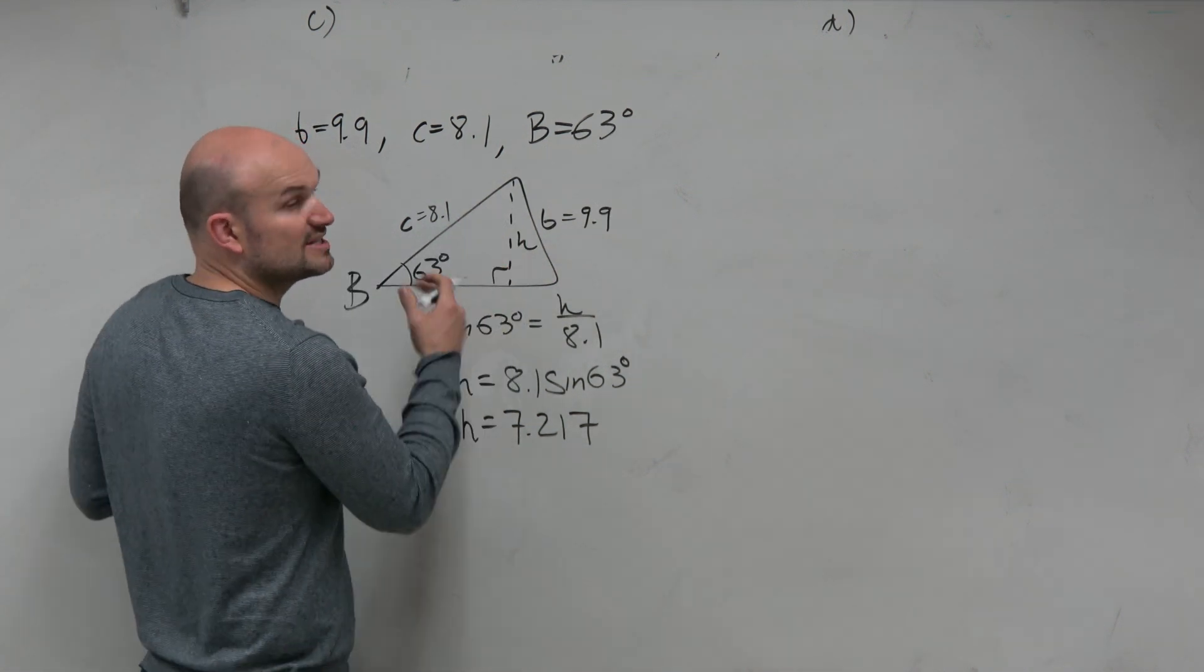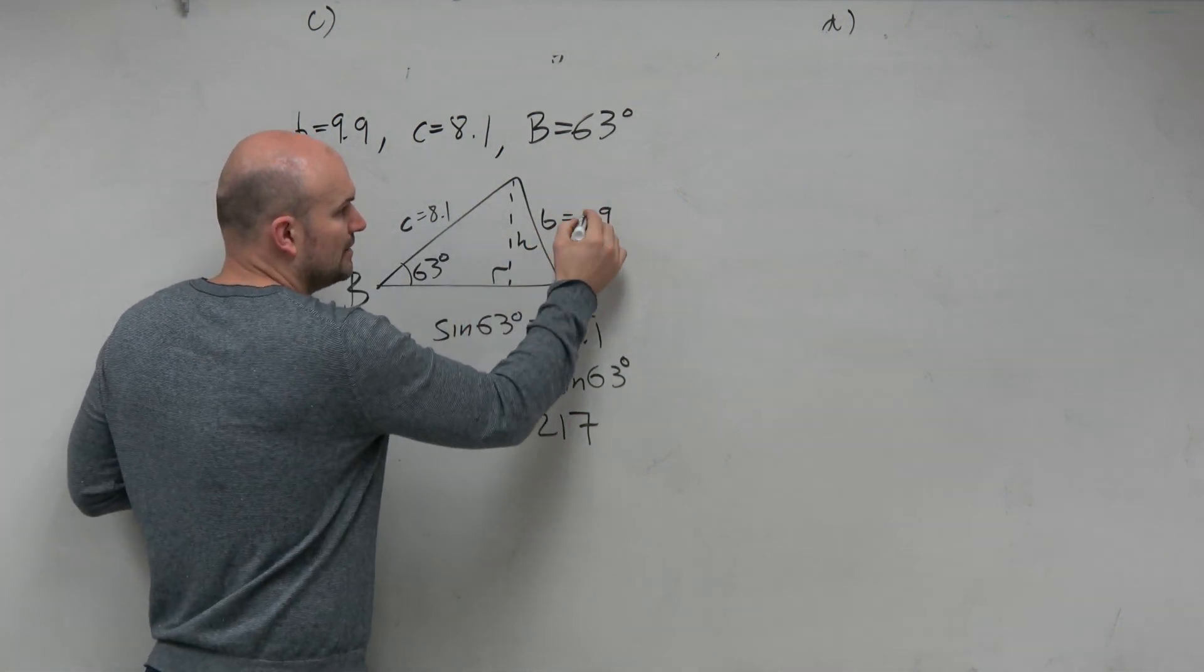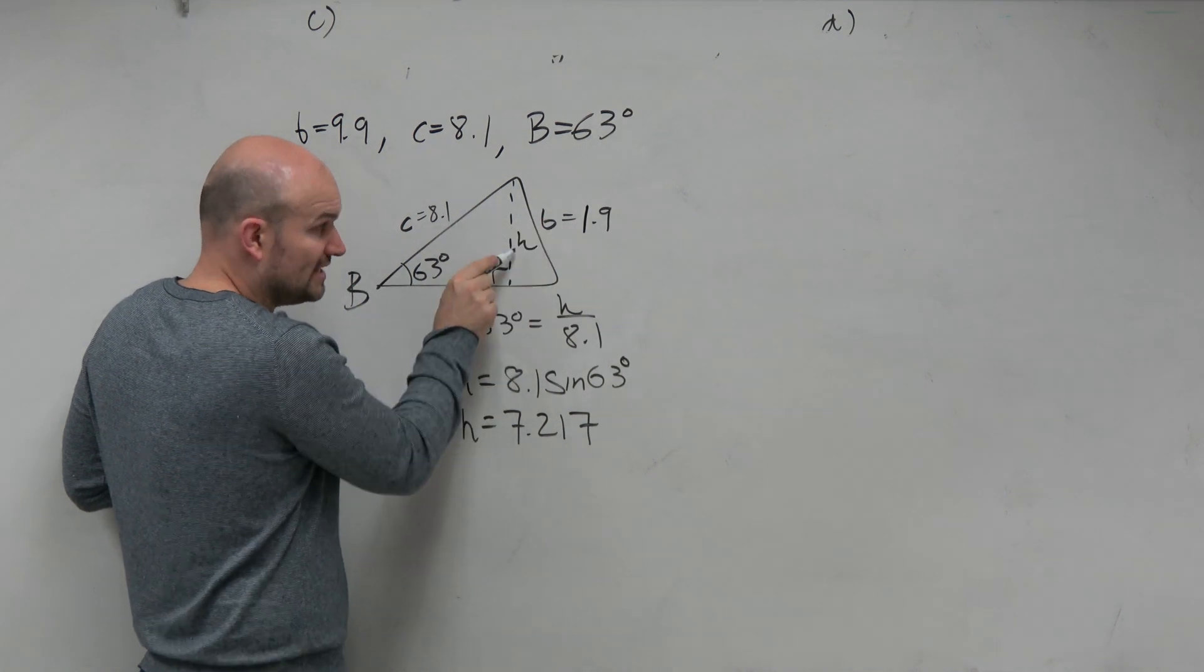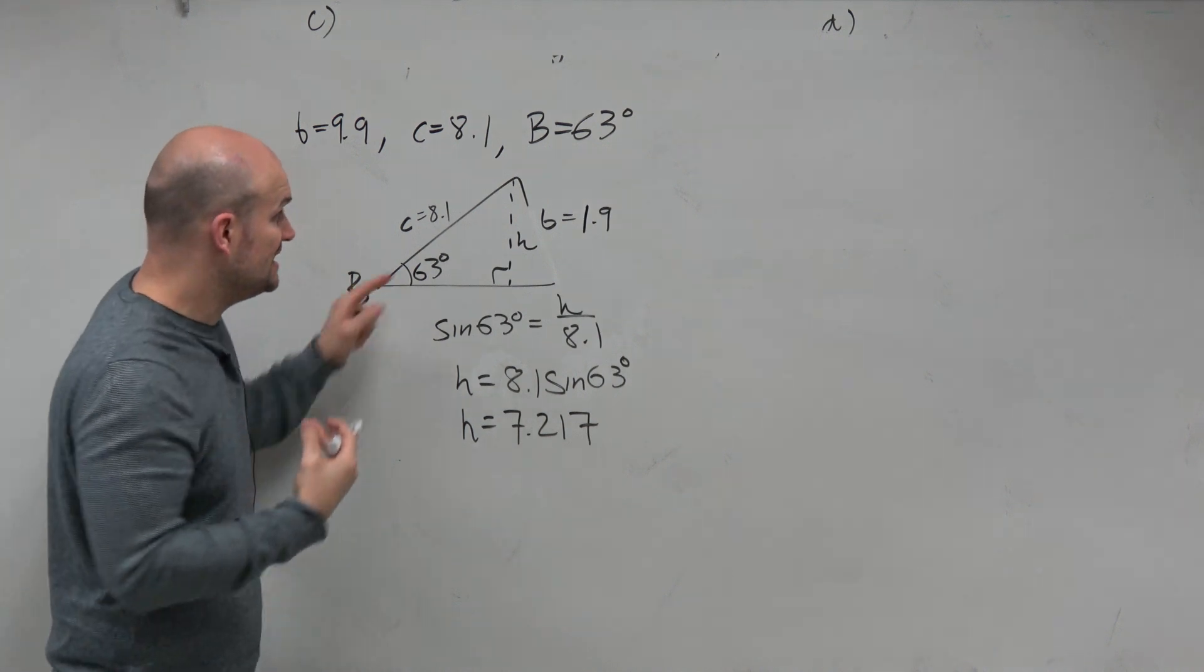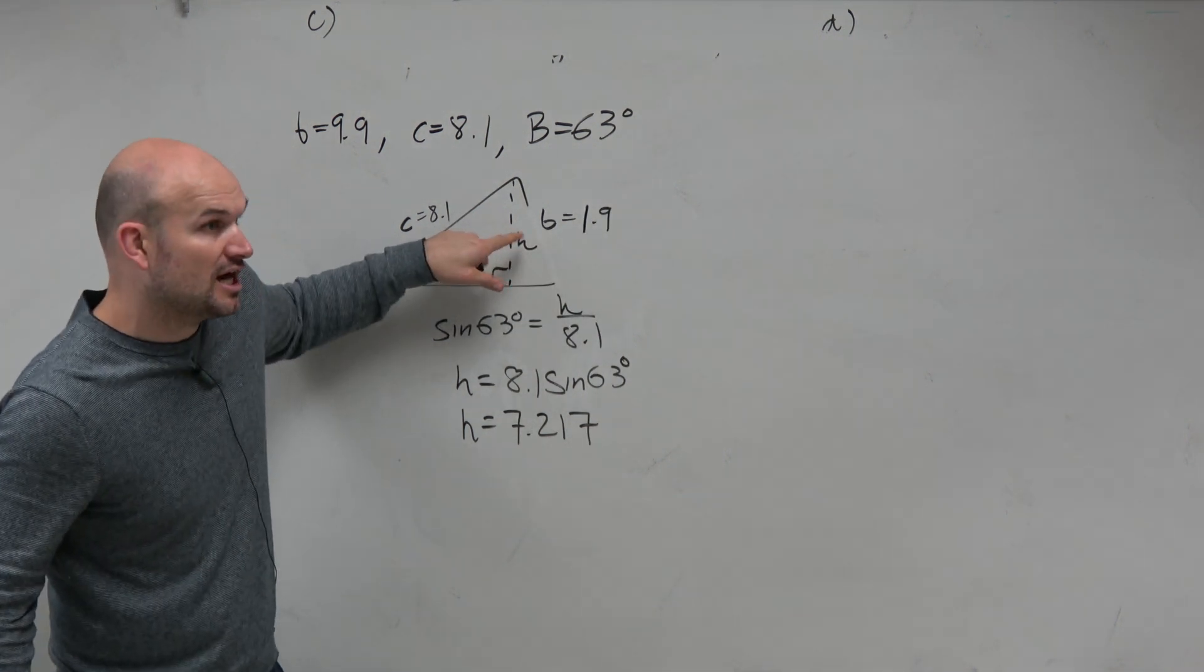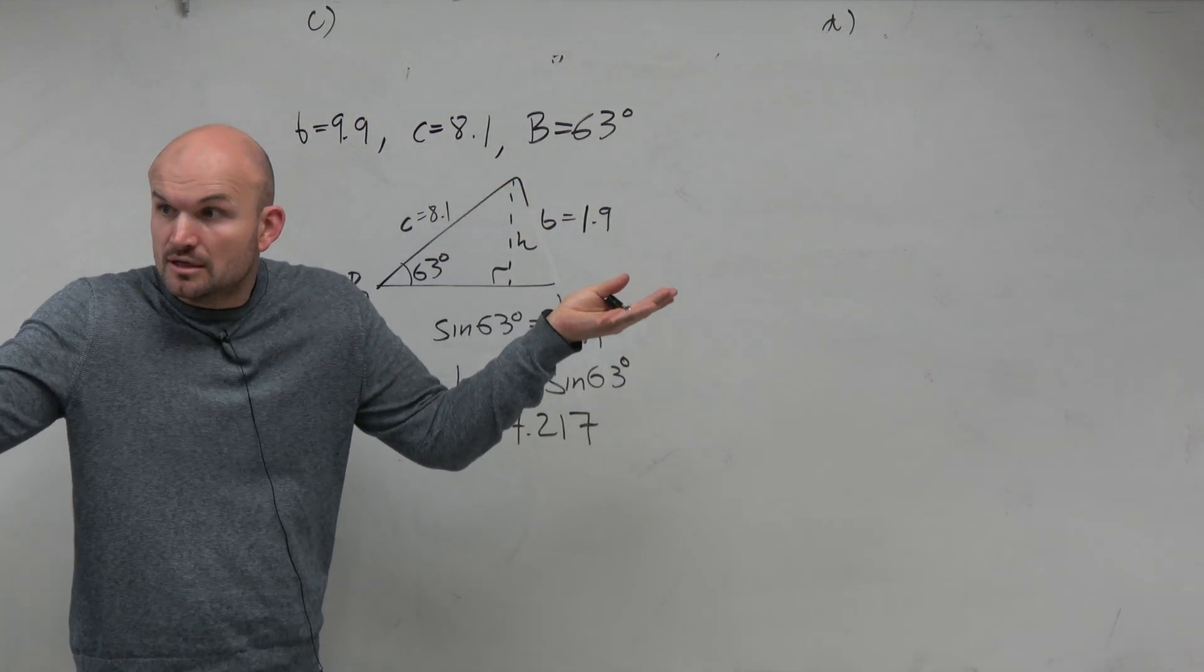Again, let's just, for the sake of argument, pretend this was 1. If that was 1 and this was 7, that side length would look like that. Do you see, when this side is shorter than the height, no triangle can exist. Agreed?